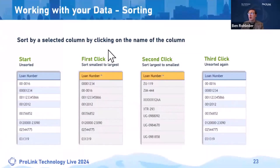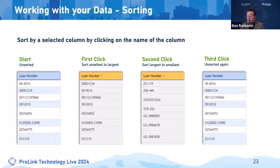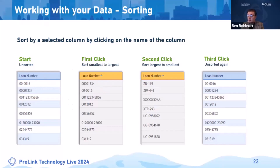Working with your data: you can sort by a selected column by clicking on the name of the column. That's an important detail — to apply ascending or descending sorts onto a column, you need to make sure to click on the left-hand side of the column header by the name, because clicking on the right side on the blank part of the screen may not recognize the sort. The default state is unsorted. If you click on loan number once, it'll sort ascending — smallest to largest. If you click again on the same spot, you'll have a descending sort applied.